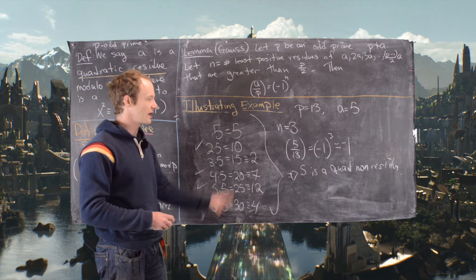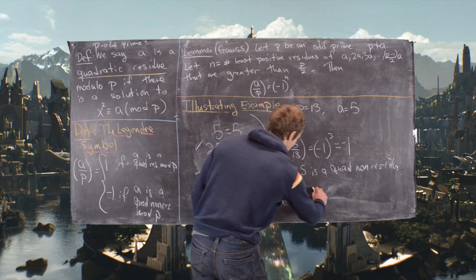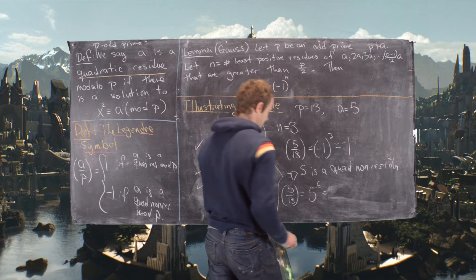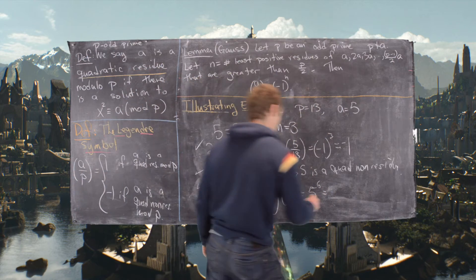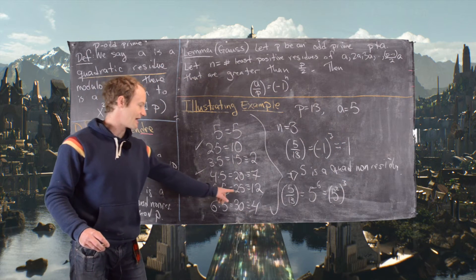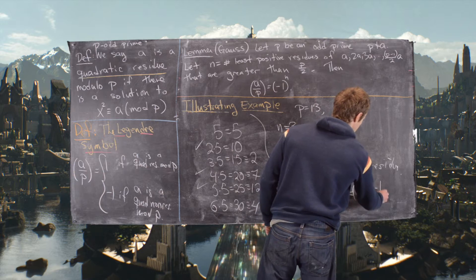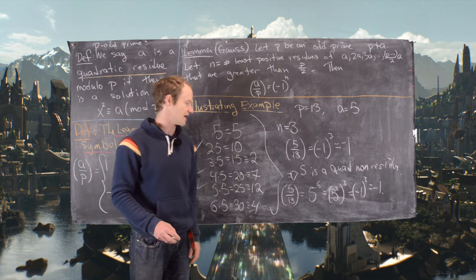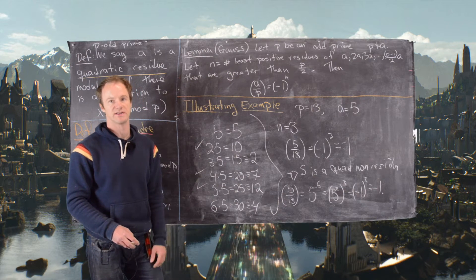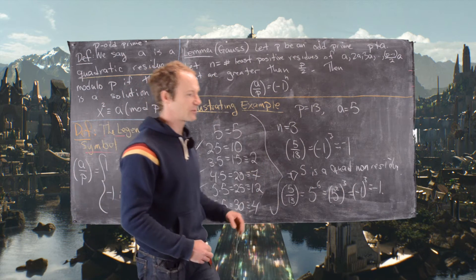Let's also check that with Euler's criterion to make sure it makes sense. The Legendre symbol (5/13) equals 5 to the (p-1)/2 = 5^6, which is the same as (5^2)^3. We calculated 5^2 = 25 ≡ 12 ≡ -1 mod 13, so this equals (-1)^3 = -1. We got the same value of the Legendre symbol two ways: from Gauss's Lemma and from Euler's criterion.